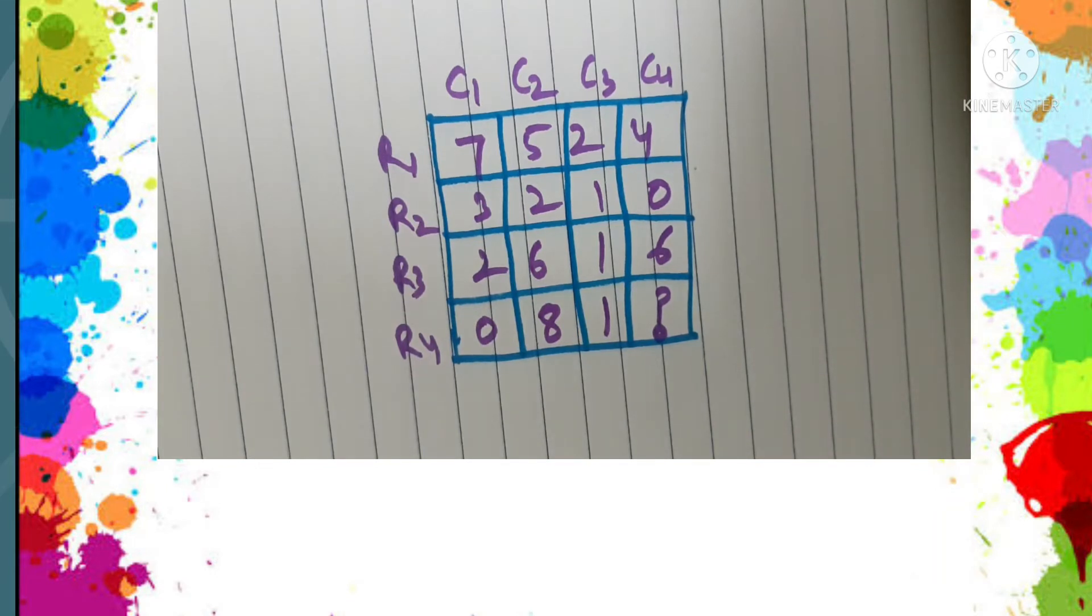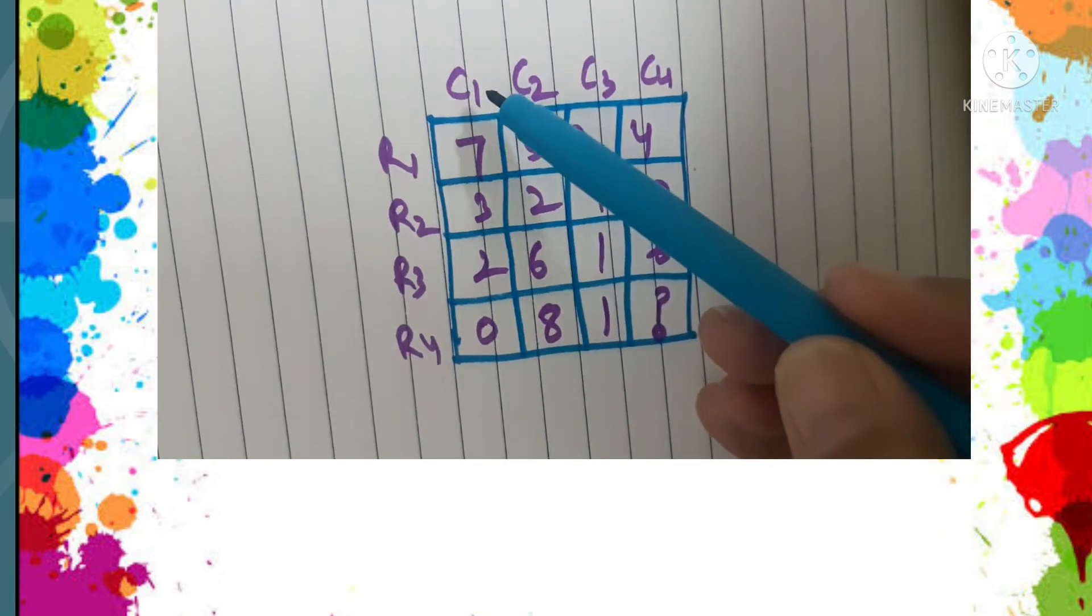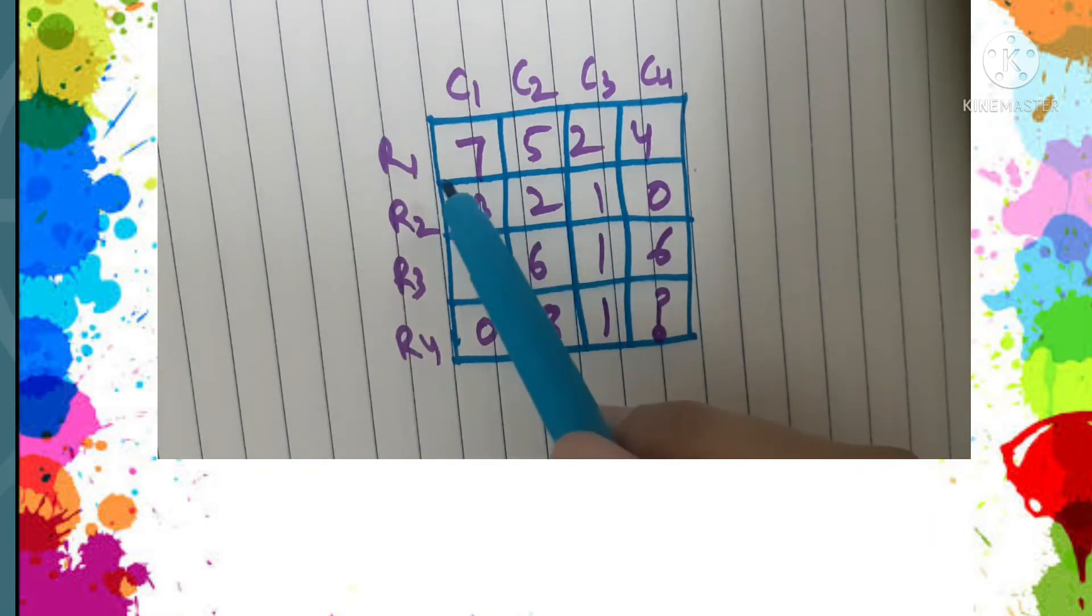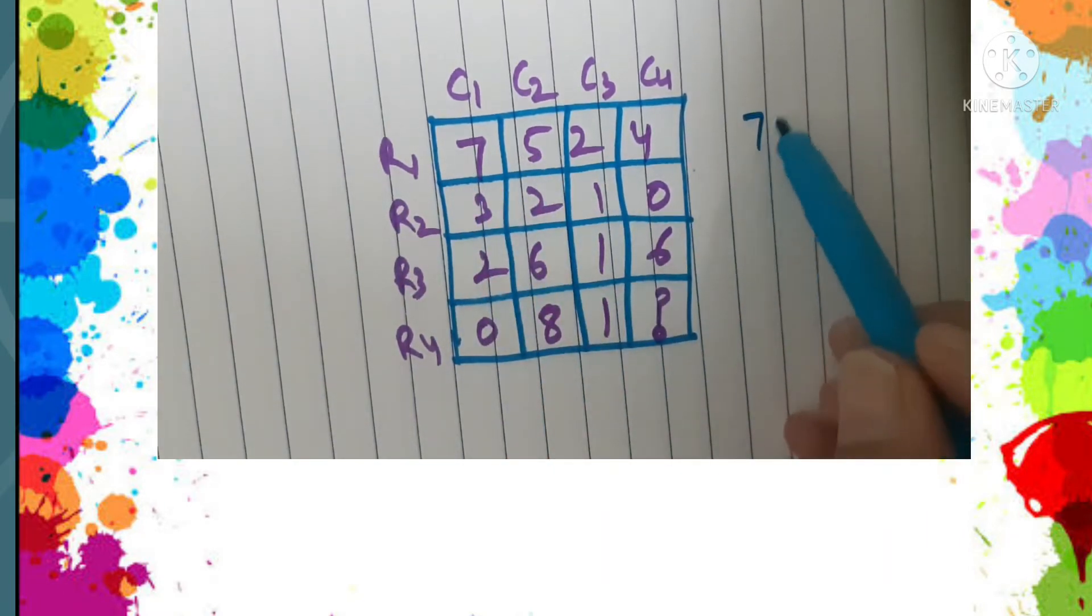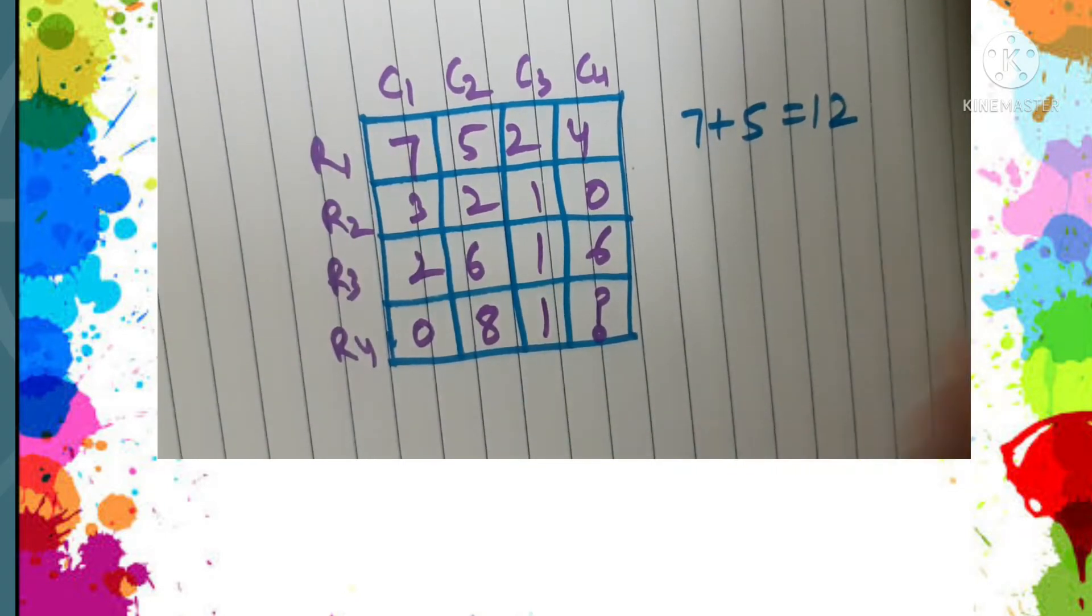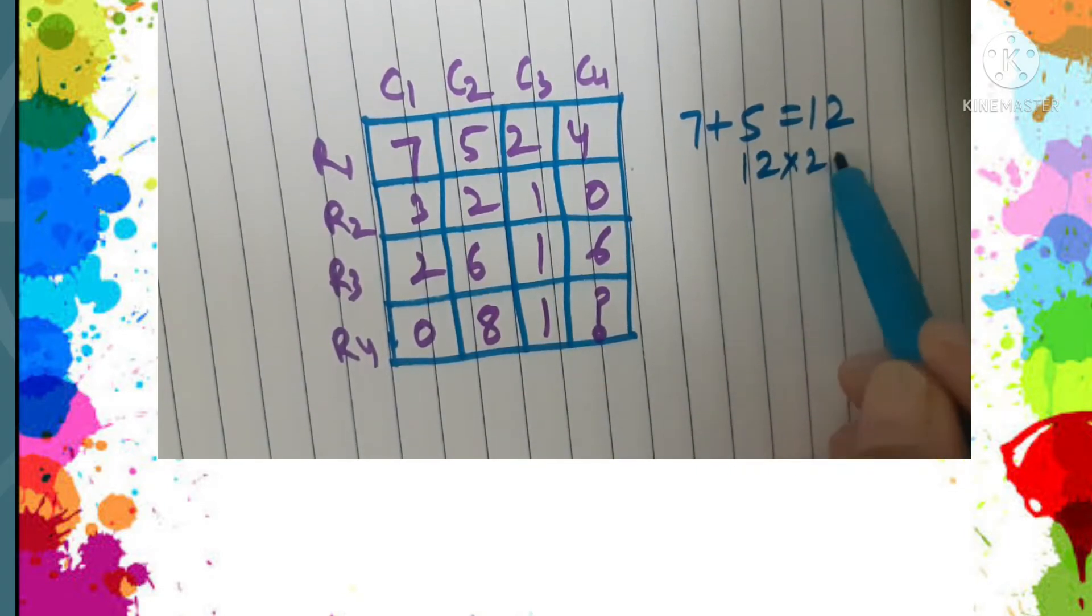Observe the numbers which are given in column one and column two. So in the first row it is seven and five. We add them: seven plus five is twelve, and when we multiply twelve by two we get twenty-four.